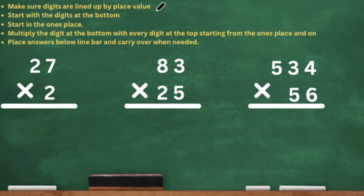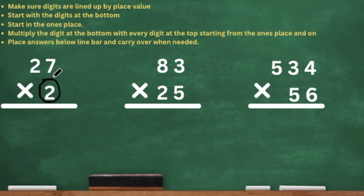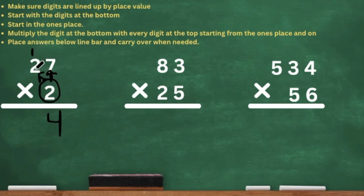Okay, you guys should be done. So let's take a look. We have 27 times 2. We're going to follow the steps — the digits are lined up by place value, and we're going to start at the bottom and multiply that bottom digit by every digit at the top. Two times 7 is 14 — put the 4 at the bottom, carry the 1. Then 2 times 2 is 4, plus the 1, which is 5. And that's how you get 54.